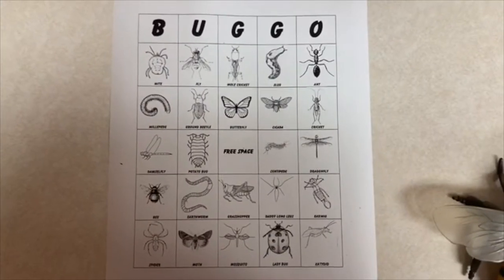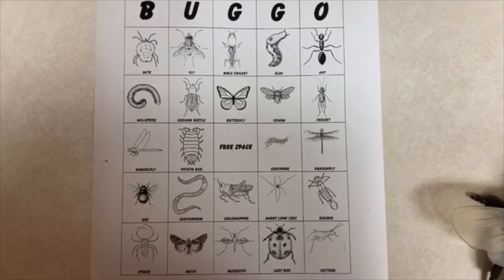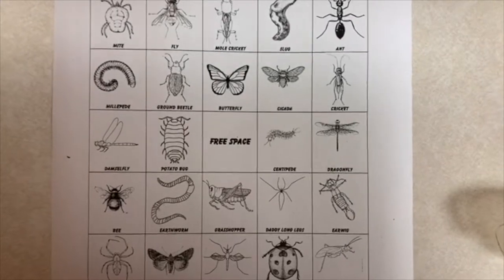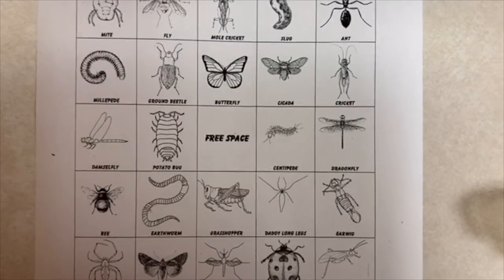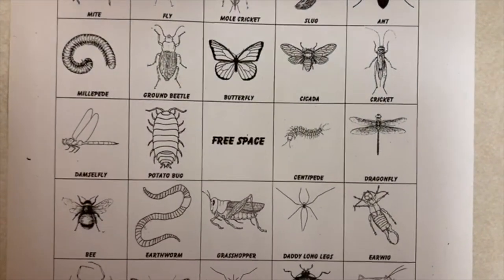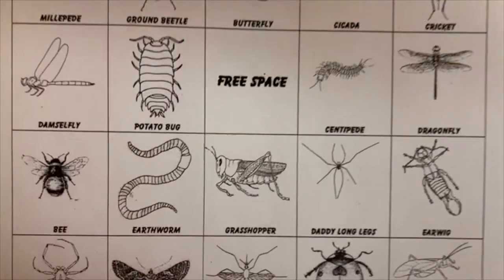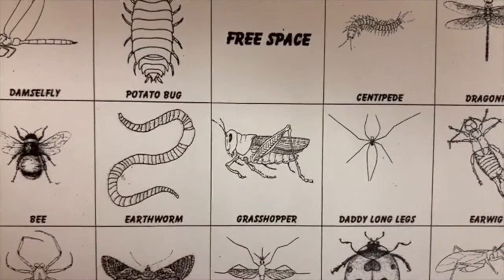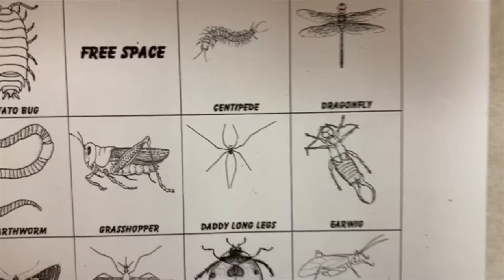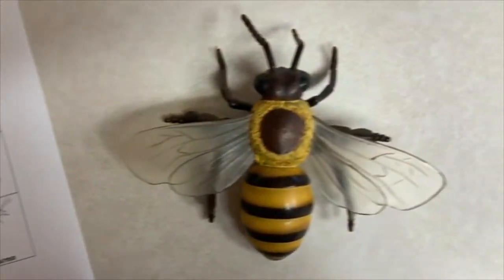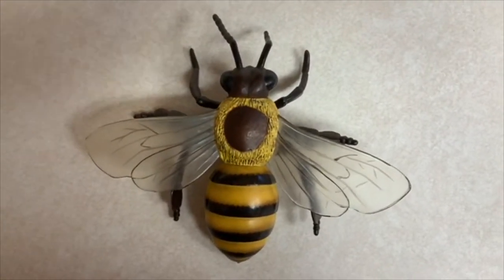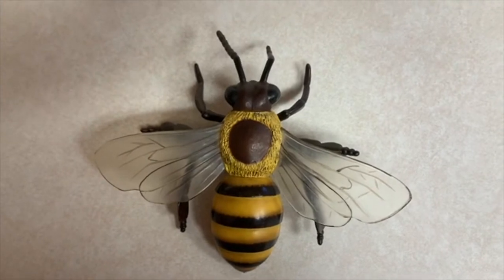When we think of bugs, we think of all kinds of creepy crawly things. They may not all be insects. Some of them might be arthropods, some of them might be annelids like a worm, some of them might be arachnids like a spider. But when we think of an insect, there are some things we can look for to know whether we have an insect or not.